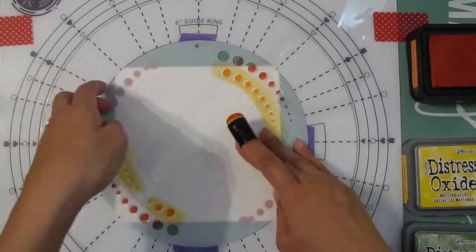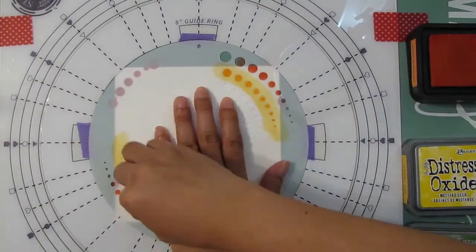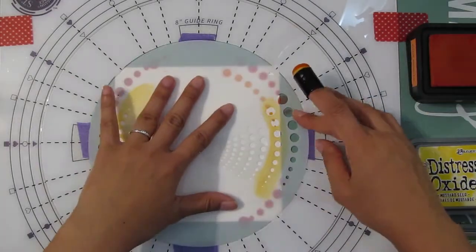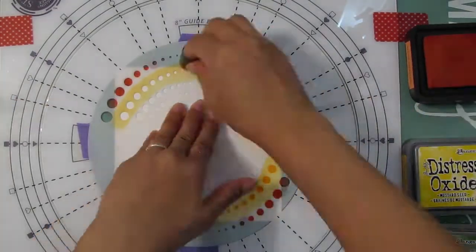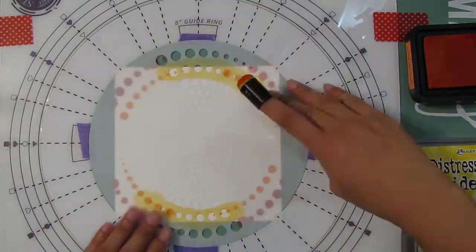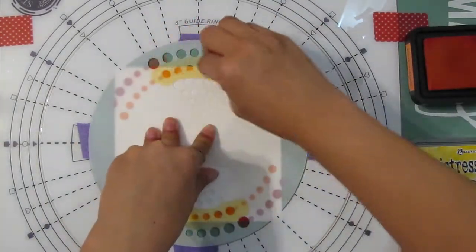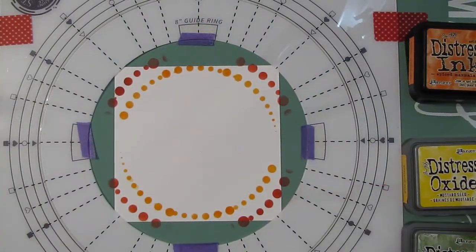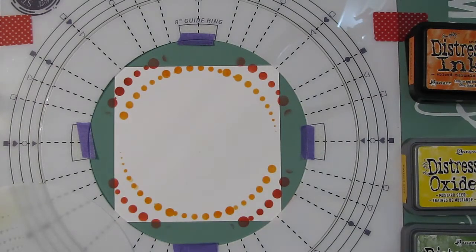I'm using these finger daubers for the ink application. I find that for more small, detailed stencils I like the smaller applicator instead. I get a more precise application. Here I'm just going around in a circle, and I'm glad that I can see through the stencil so I can see where I'm applying the ink.